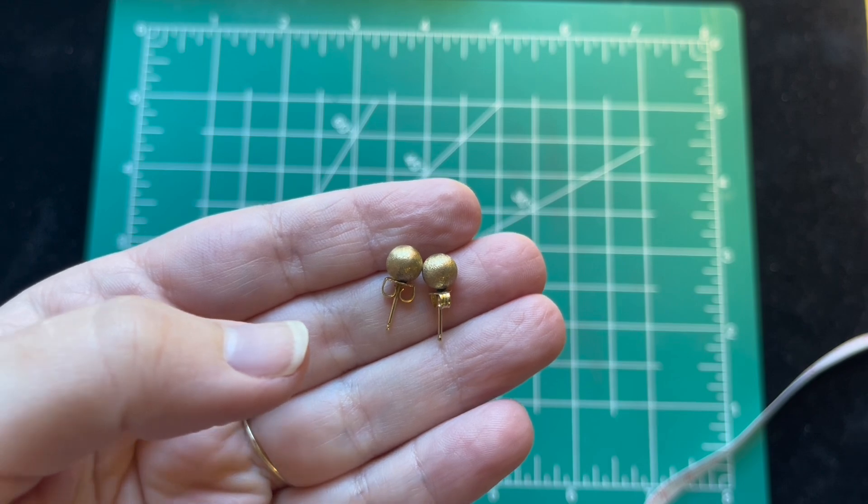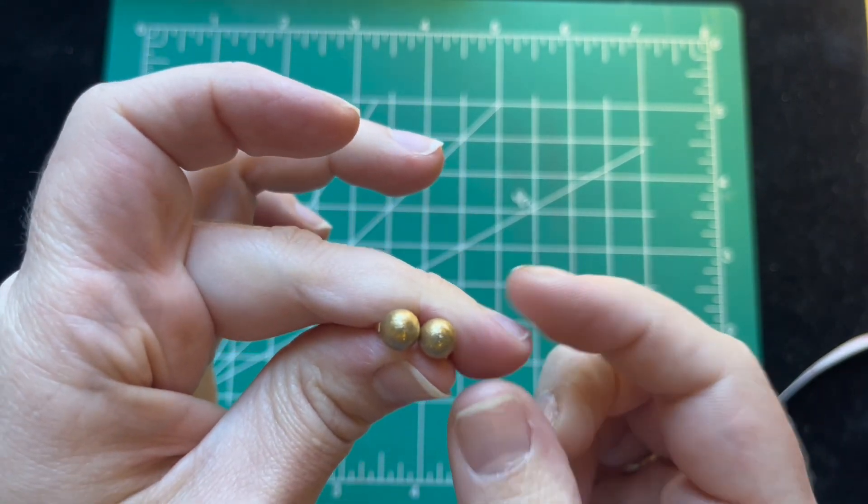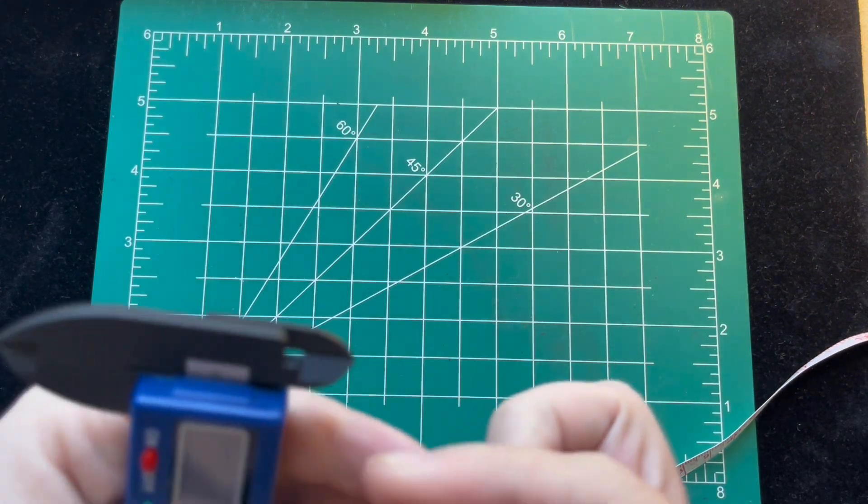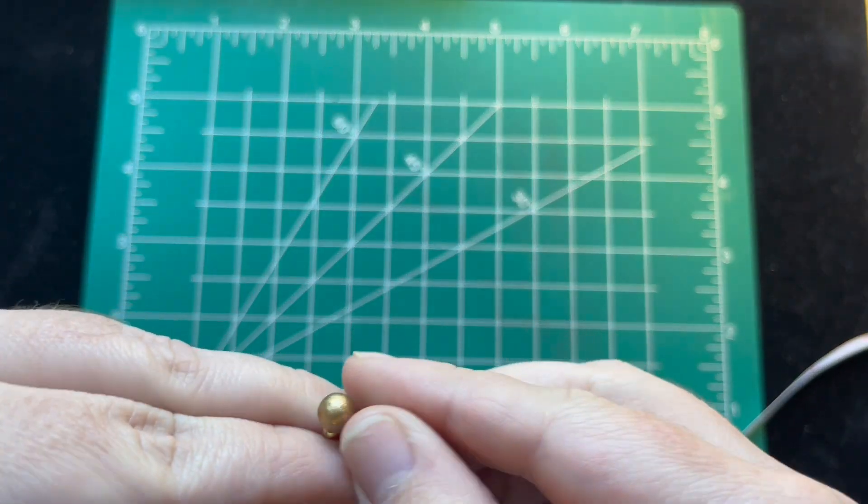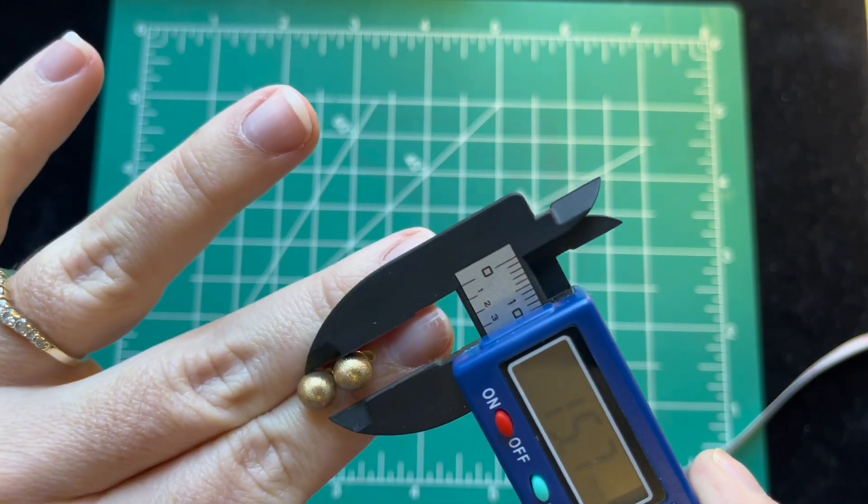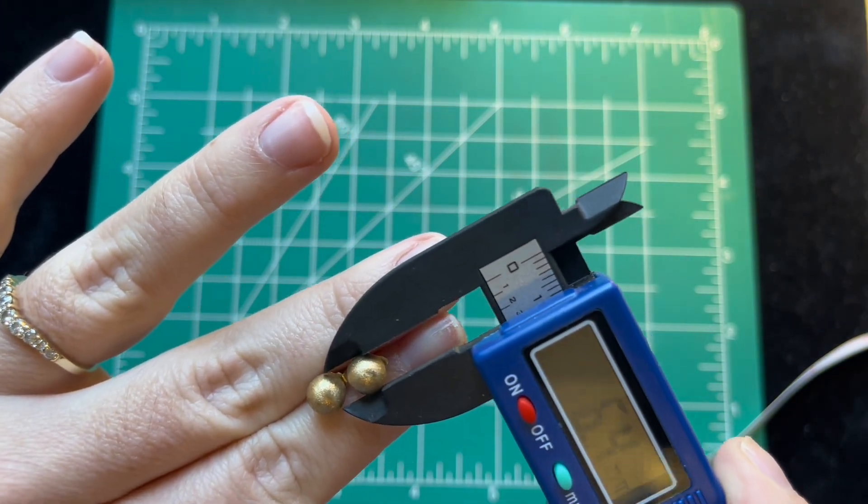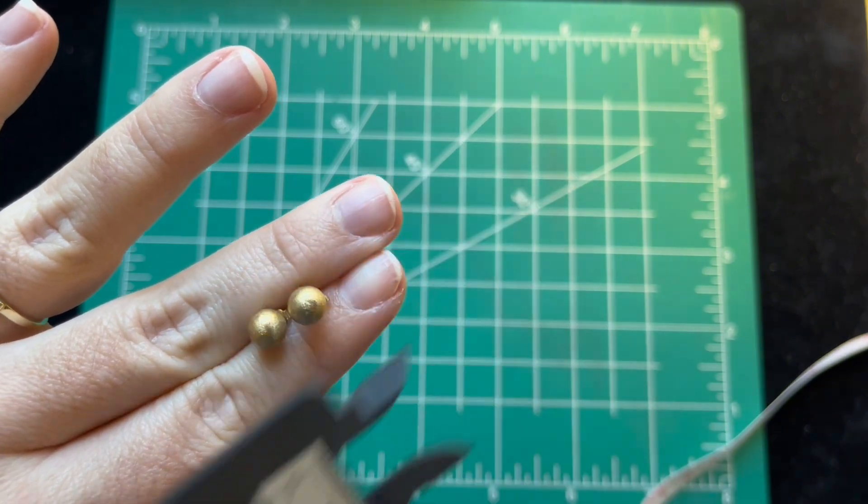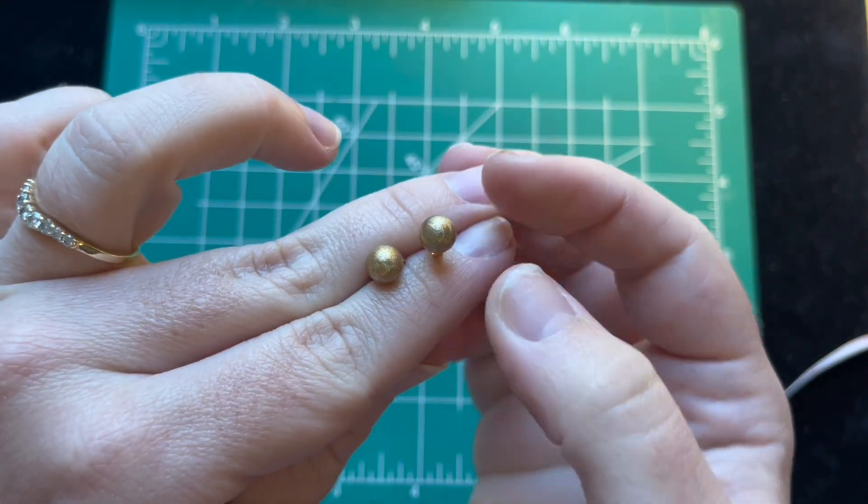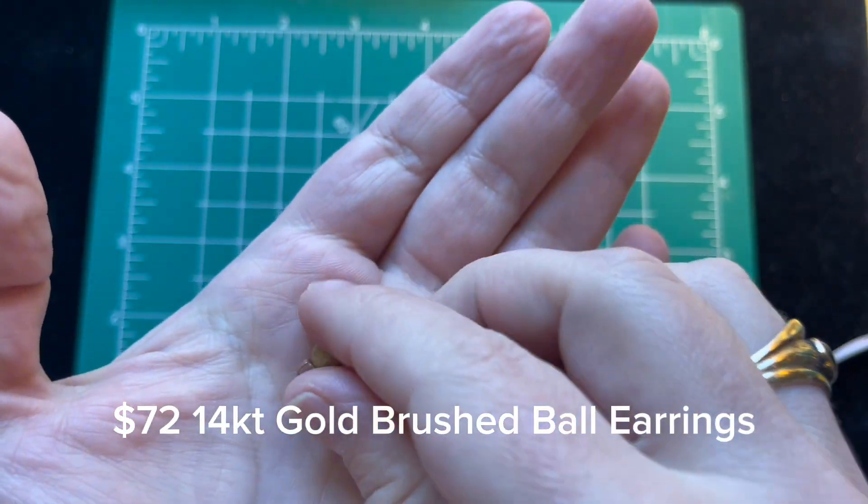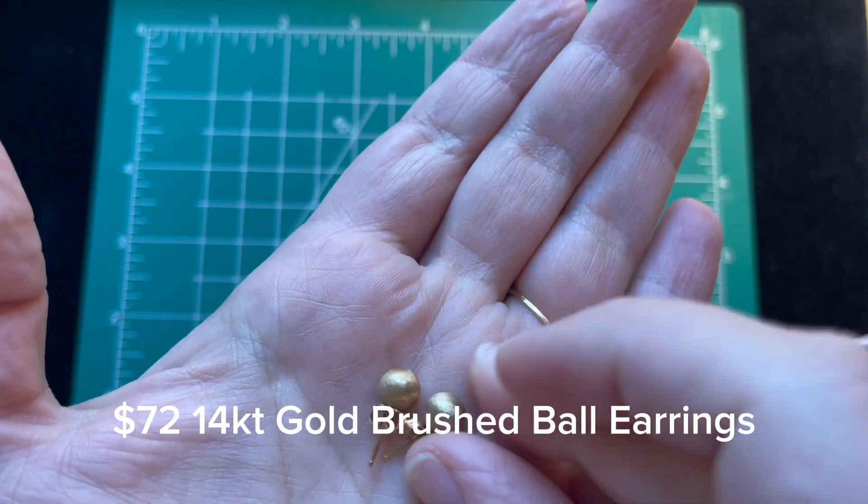These measure about six and a half millimeters, how wide the balls are. So I'm asking seventy-two dollars for these fourteen karat gold earrings.